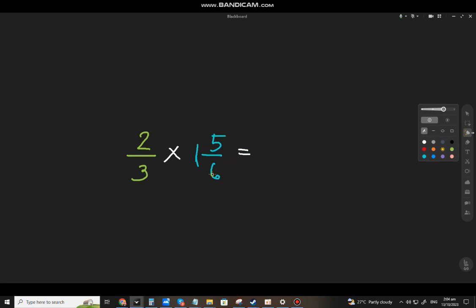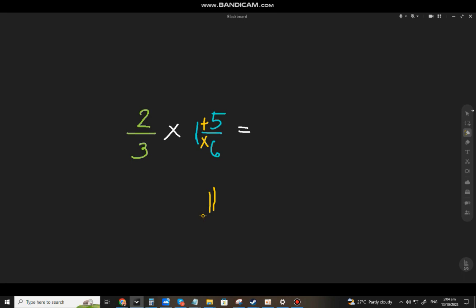Next number, kailangan ko munang i-change siya sa improper. That will be 6 times 1 is 6, plus 5. That will be 11. Copy mo yung denominator. Tapos copy mo ito, at yung thirds. Pwede na natin silang i-multiply directly. Times 11, that will be 22. 3 times 6, that will be 18. This is the final answer.